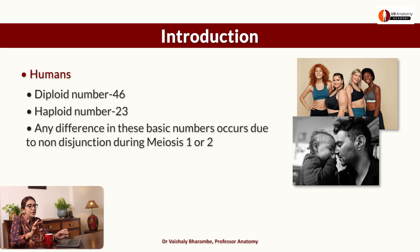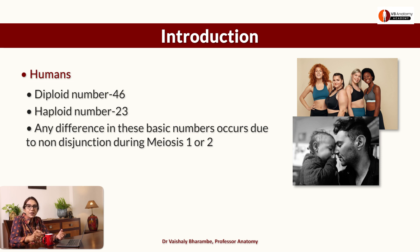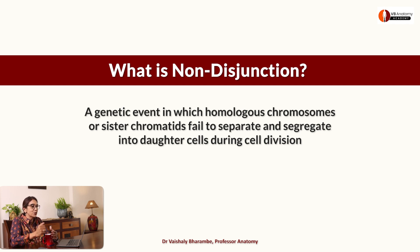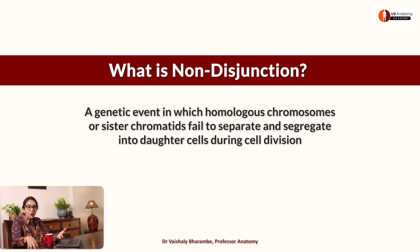Any difference in these basic numbers can occur because of something called non-disjunction. This constant number of 46 is altered if there is non-disjunction happening in the parent. Non-disjunction is a genetic event in which homologous chromosomes — chromosome pairs 1, 2, or XY — and sister chromatids refuse to segregate into two daughter cells at the time of meiosis.